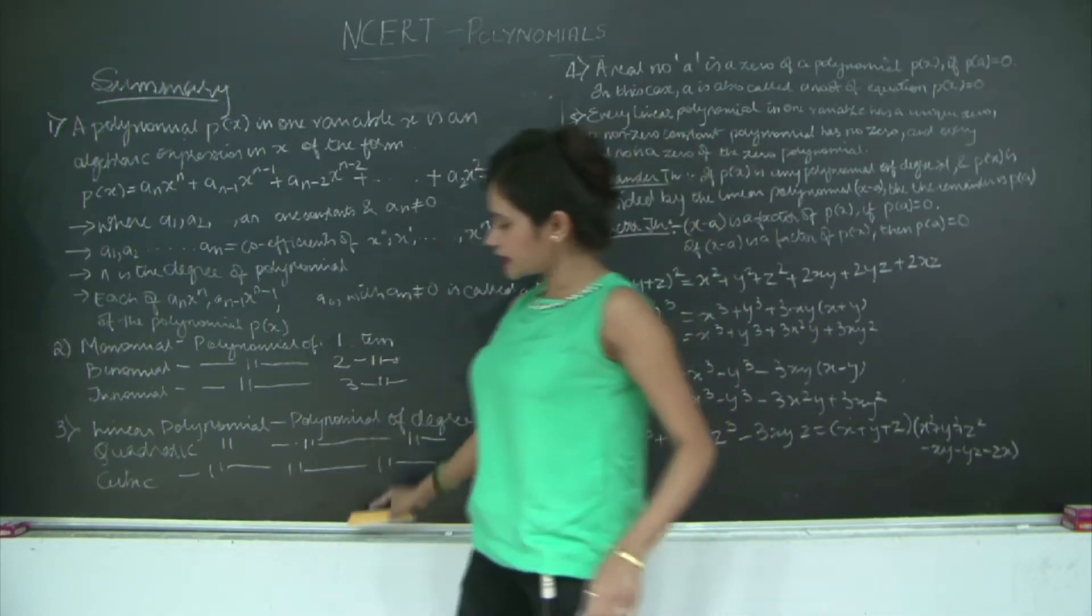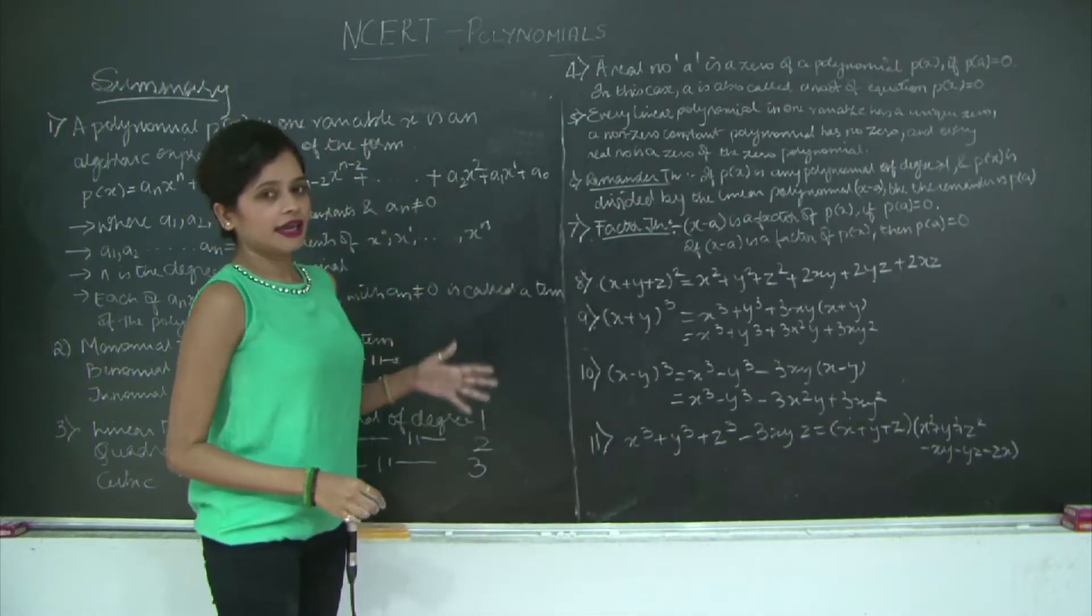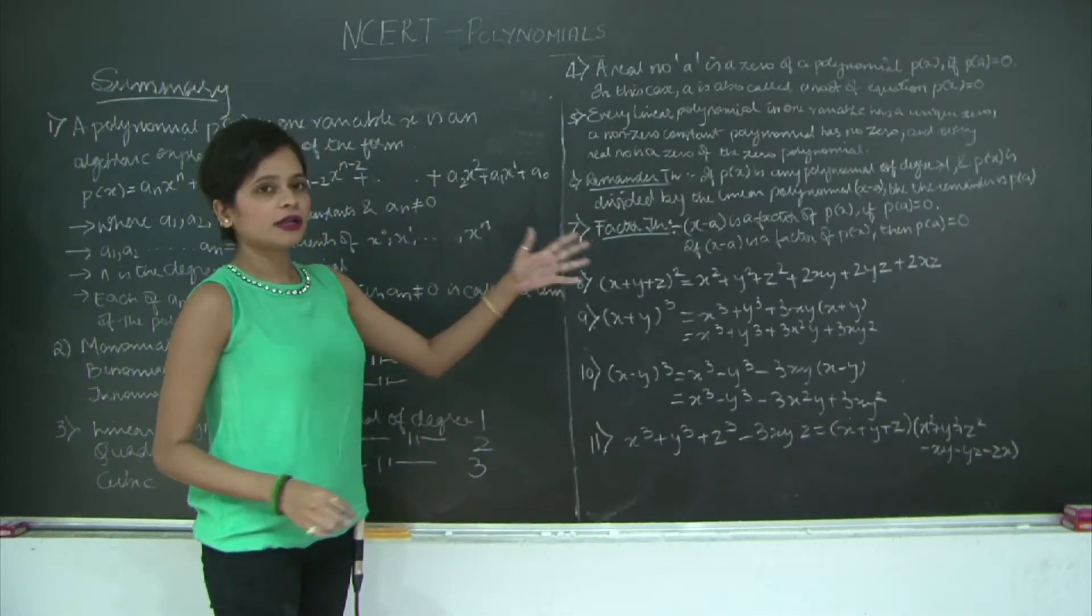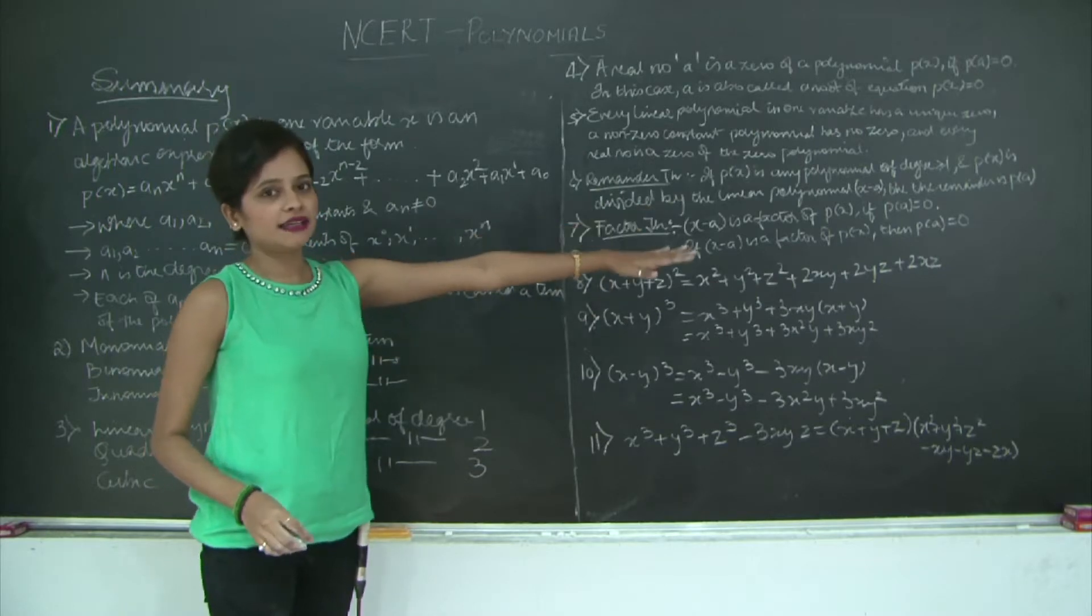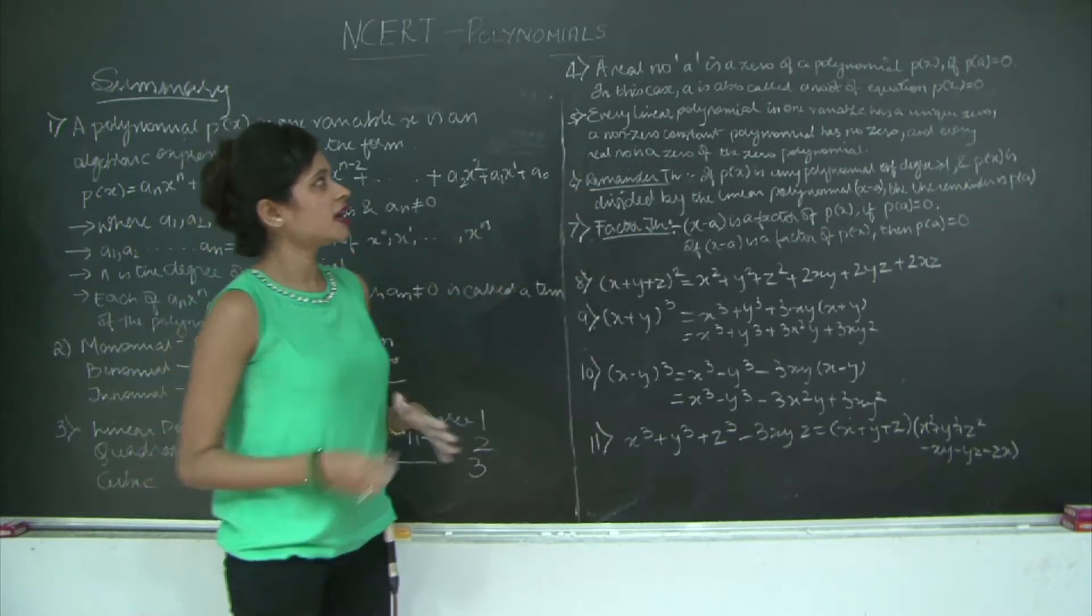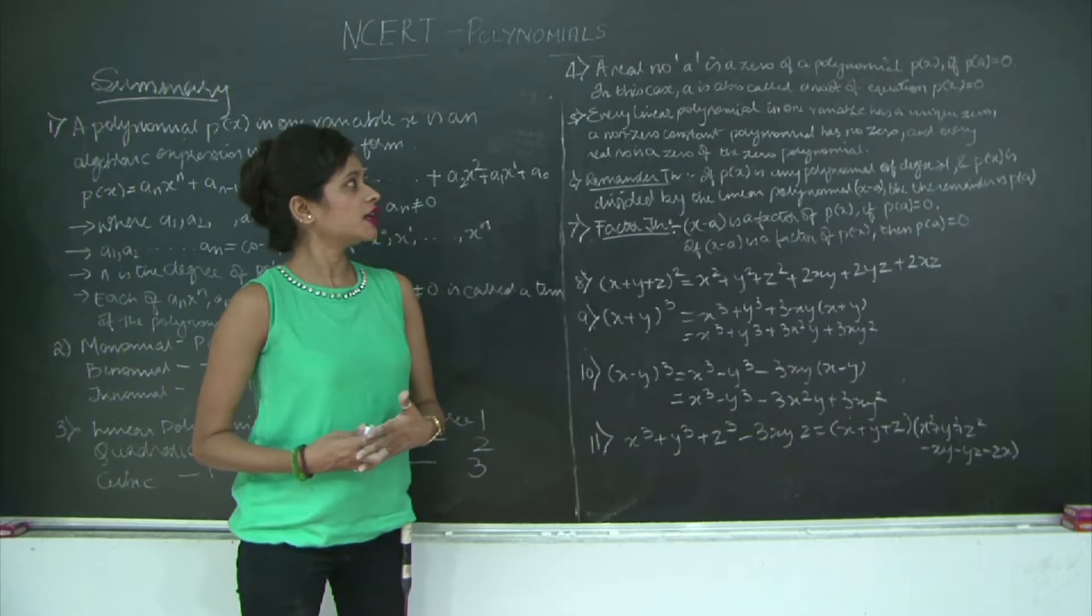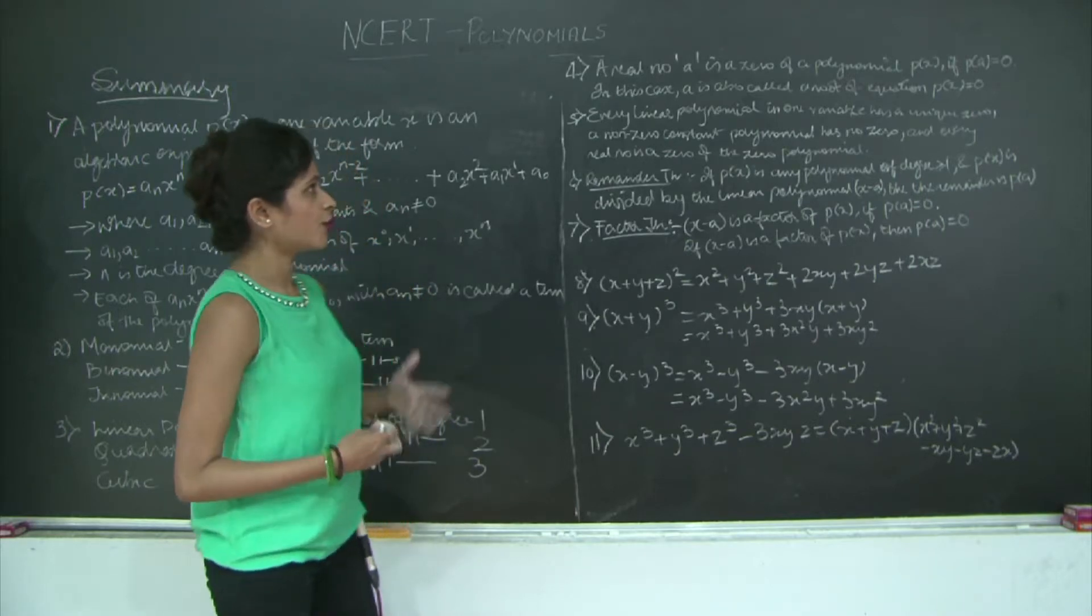Let's move on to the second side of the summary. A real number a is a zero of a polynomial P(x) if P(a) equals 0. In this case, a is also called the root of the equation P(x) = 0.